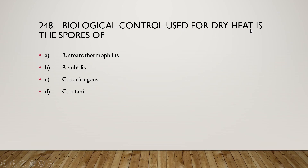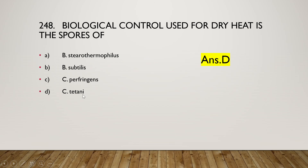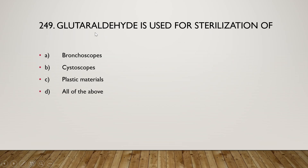Next question: the biological control used for dry heat is spores of Bacillus stearothermophilus, Bacillus subtilis, Clostridium perfringens, or Clostridium tetani? The right answer is option D — Clostridium tetani is used as the biological control for dry heat sterilization.